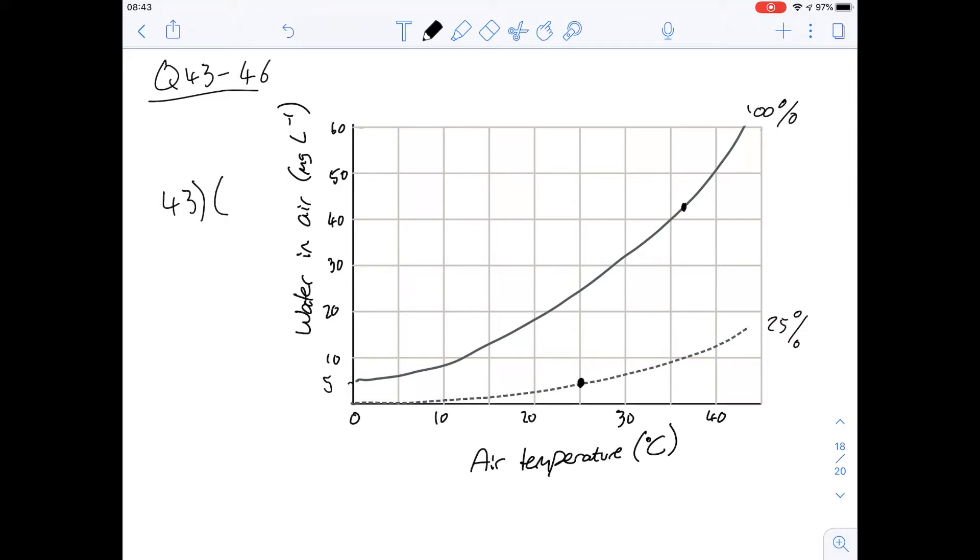Question 44 says which of the following statements is correct so let's go through them. A says as the temperature of the ambient air increases its humidity has less effect on the amount of water lost in exhaled air. The amount of water that's lost in exhaled air is mainly prevented by these cooling structures that exist and so the actual temperature of the ambient air itself doesn't necessarily have much of an effect.